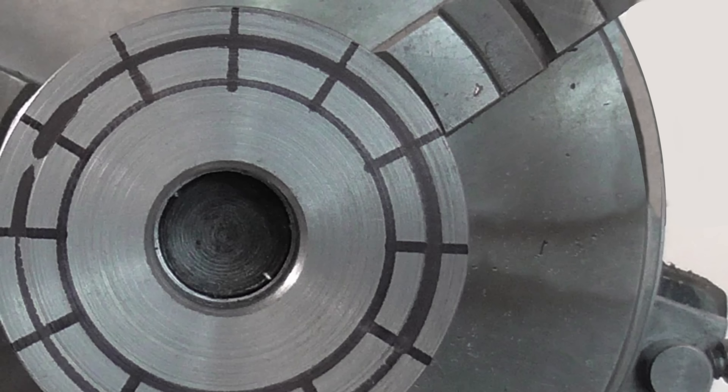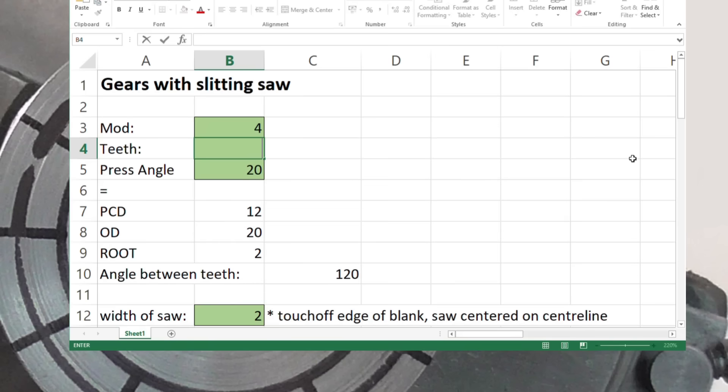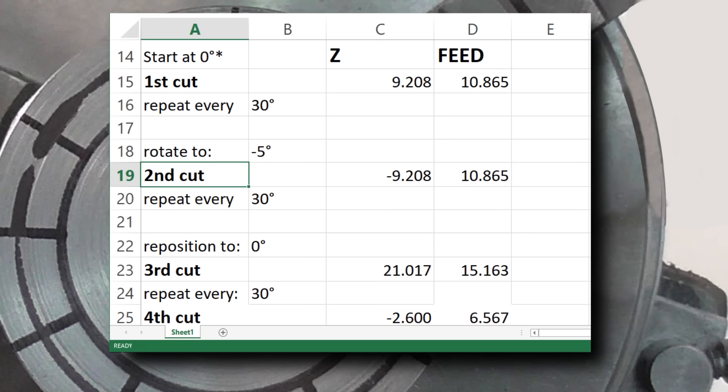If you think that seems like a lot of maths, don't worry. I've put it all in a spreadsheet that works everything out from a few basic values, like the number and size of teeth. You can download this for free. More on that later.